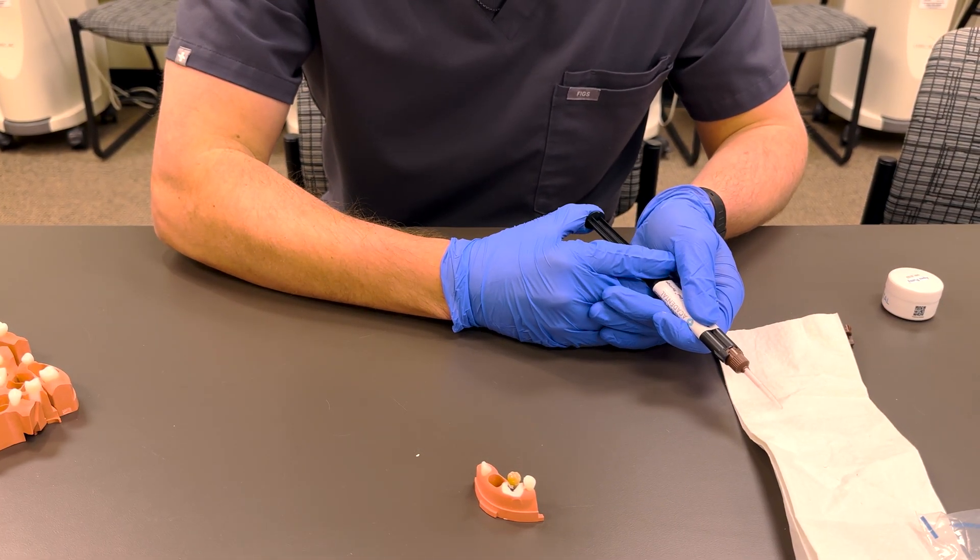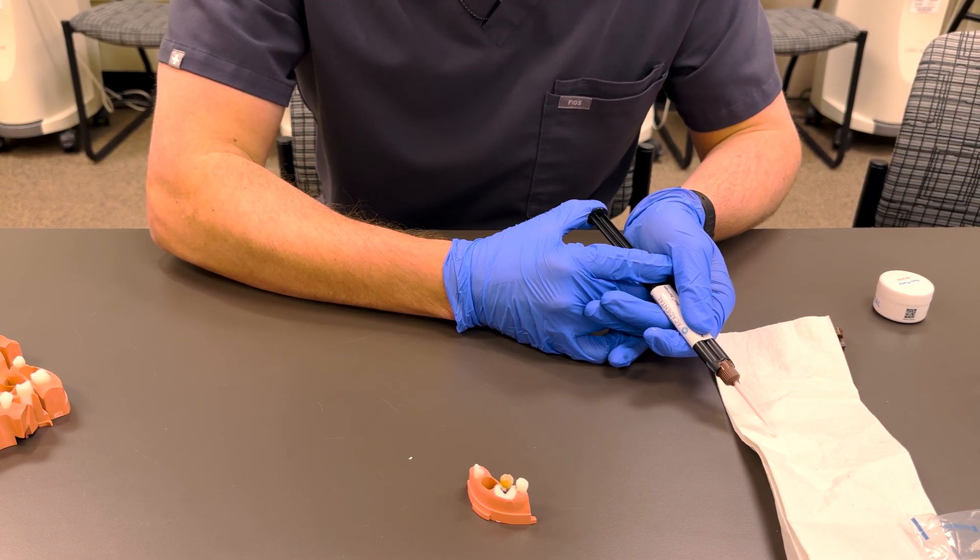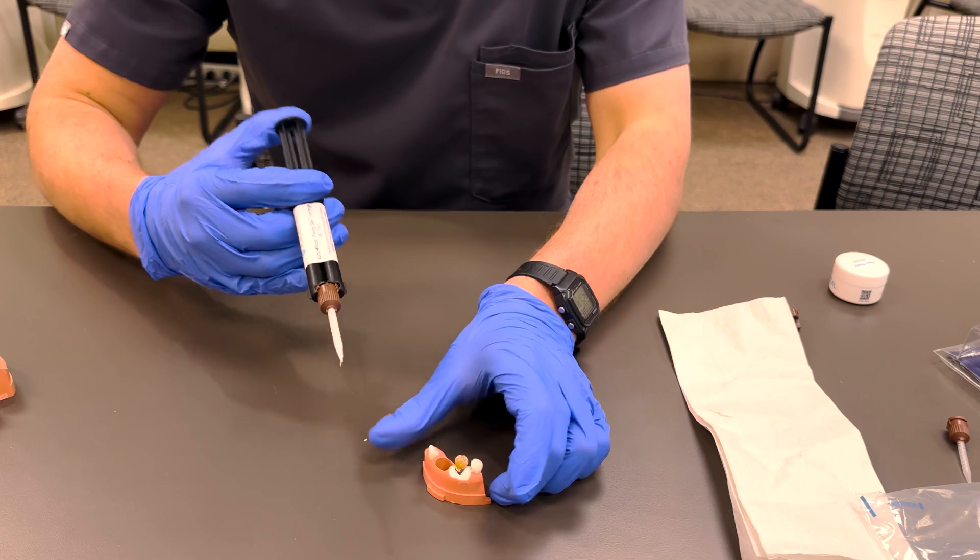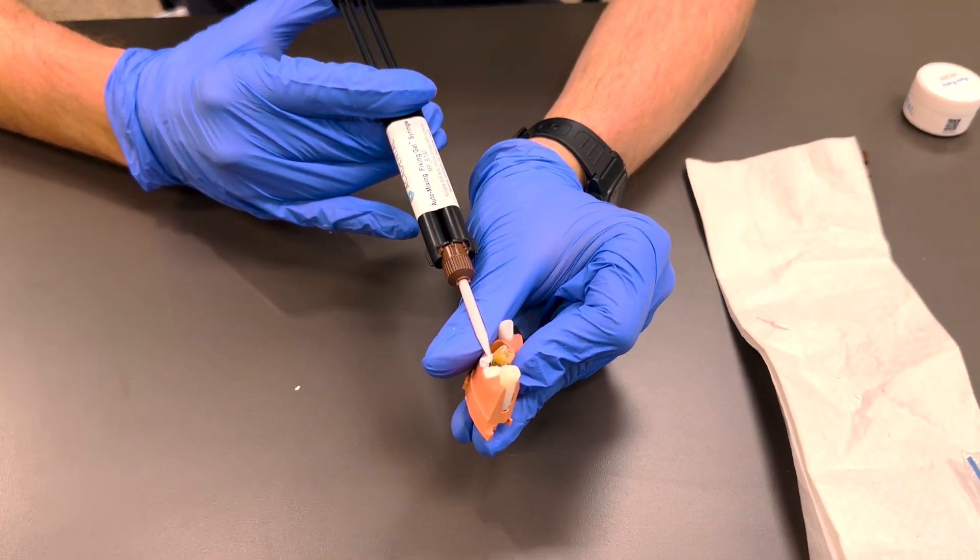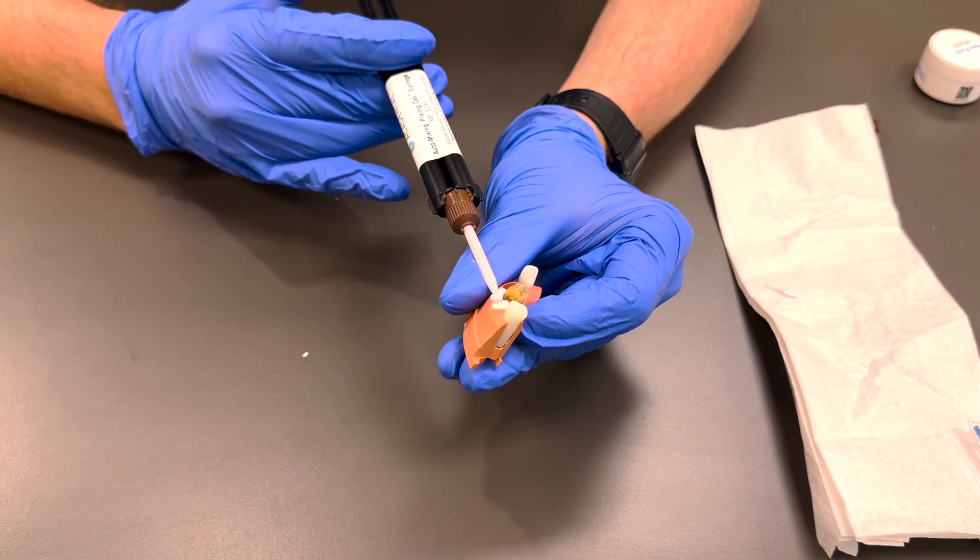You're just going to extrude a little bit like you normally would. It comes out as this pink material. Make sure it's all mixed, and then you're going to put a small layer over the top of the apex putty.